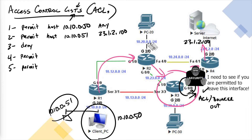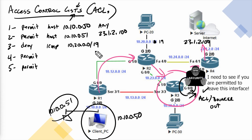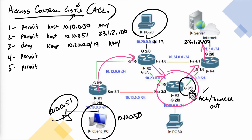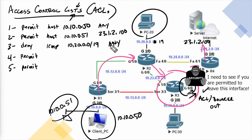For the next example, let's imagine we have a 10.20.0.0/19 network. We want to deny any ICMP traffic sourced from the 10.20.0/19 address space going anywhere. So we add a deny entry for ICMP from that source going anywhere. If traffic from PC 20 tries to leave interface Gig 0/0, the bouncer checks line one — no match — line two — no match — line three — yes, the action is deny. The ACL drops that traffic and prevents it from being forwarded out the interface.